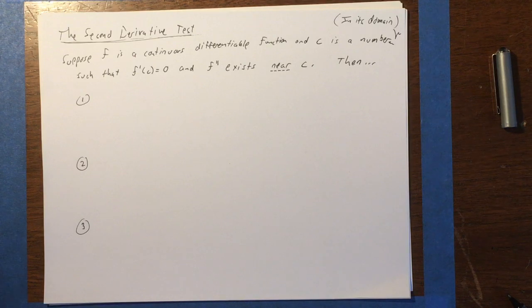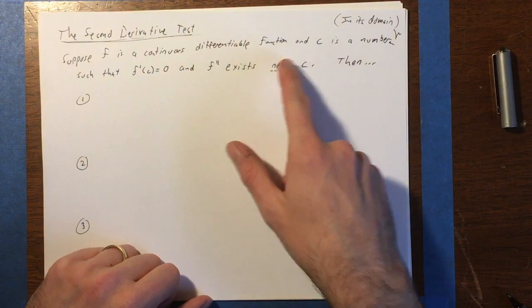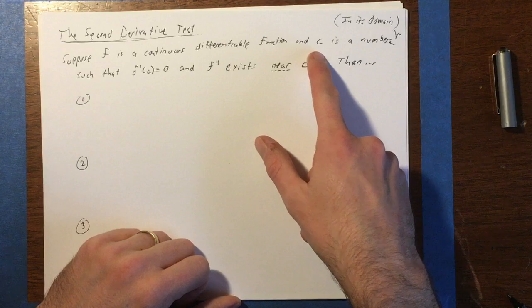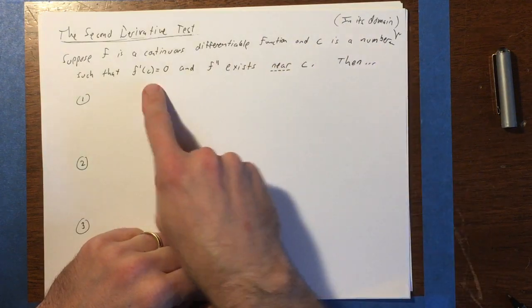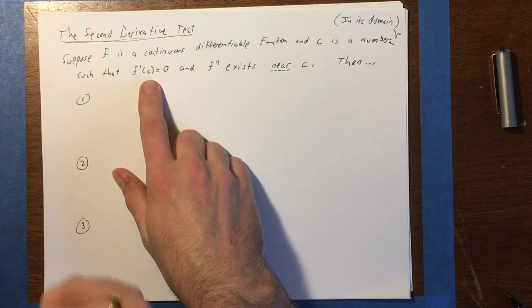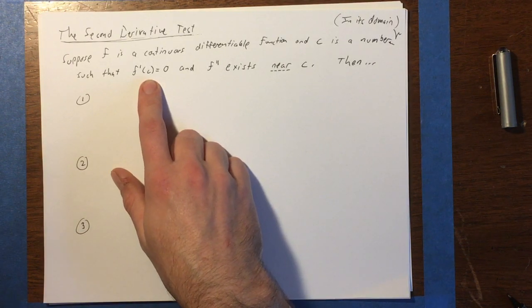So the way it works is you have a function f, which needs to be a continuous and differentiable function, and then we have a number c. Suppose that we already know a number c, which is in the domain, such that f prime of c equals zero. So this here means that c is a critical number of f, in particular because f prime of c equals zero.